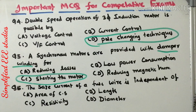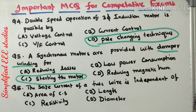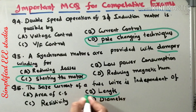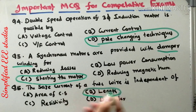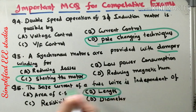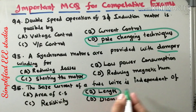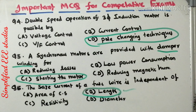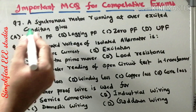Question 6: the safe current of a fuse wire is independent of which factor? Options are area of cross section, length, resistivity, and diameter. The best answer is length — the safe current of a fuse wire is independent of its length.